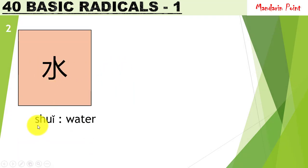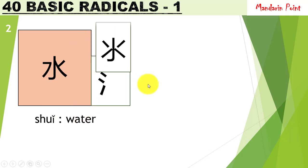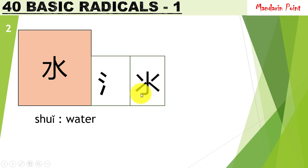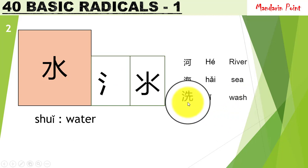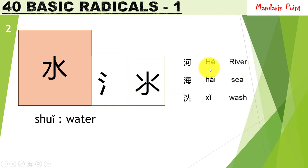The second radical is 水 shuǐ, meaning 'water.' It also has short forms using rising strokes. These three dots represent shuǐ, water. Any character having this radical will portray something related to water or liquid. For example, 洗 xǐ meaning 'wash' — you can see this radical on the left side. 海 hǎi meaning 'sea' has much water, so this radical is on the left side. And 河 hé meaning 'river' also has this radical on the left side. These radicals relate the character to its meaning.